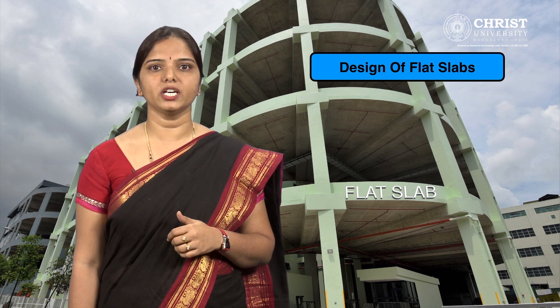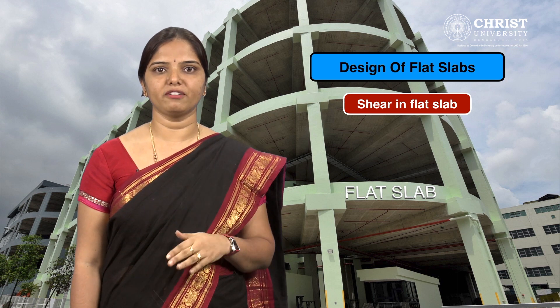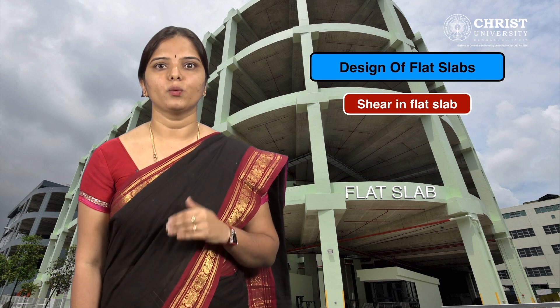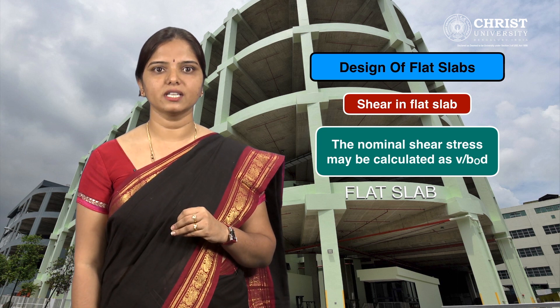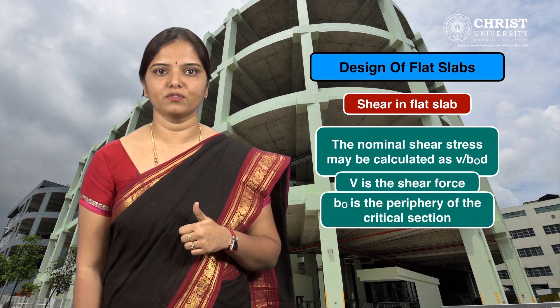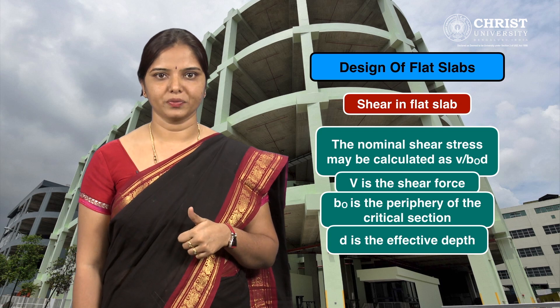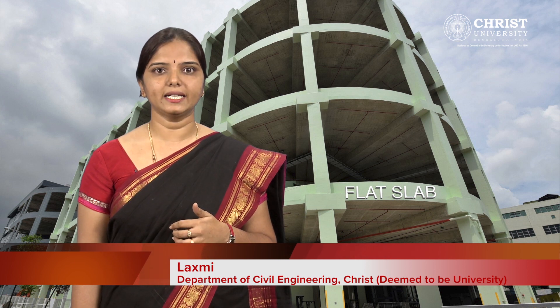The last step is shear in flat slab. The critical section for shear shall be at a distance of d/2 from the periphery of the column, capital, or drop, where d is the effective depth of the section. The nominal shear stress is calculated as V / (B0 × d), where V is the shear force, B0 is the periphery of the critical section, and d is the effective depth. If the nominal shear stress is less than the permissible, no shear reinforcement is required. When shear stress exceeds the permissible value, shear reinforcement shall be provided. If shear stress exceeds 1.5 times the permissible, the flat slab shall be redesigned.